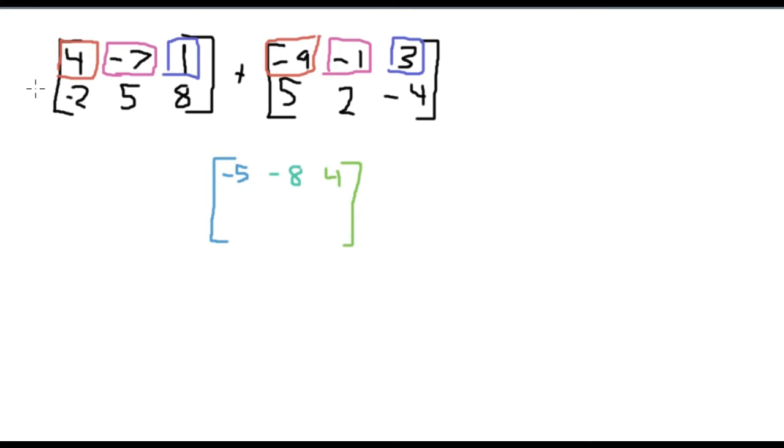Then we're going to do the same thing with the bottom ones. 5 plus negative 2 is 3. Then 2 plus 5 is 7. And then negative 4 plus 8 is just 4. And that's all you have to do. And there you go. That is what two matrices added together is.